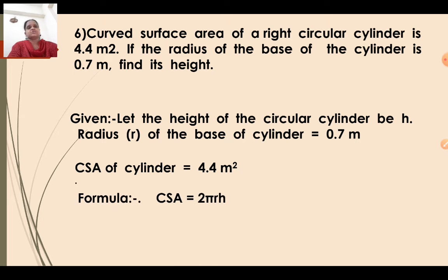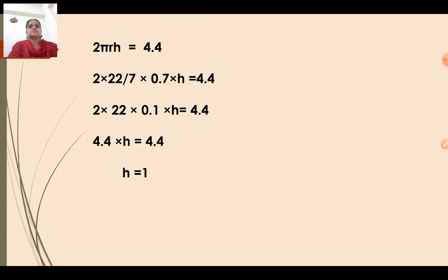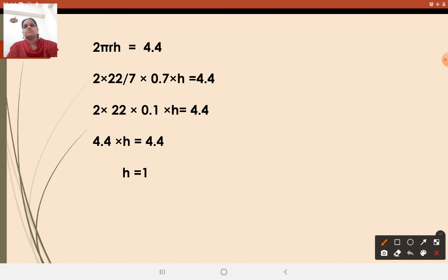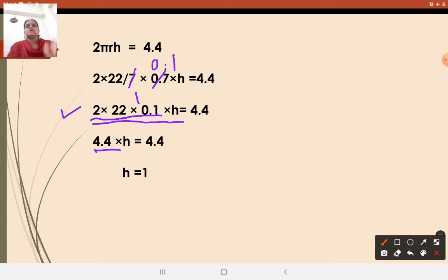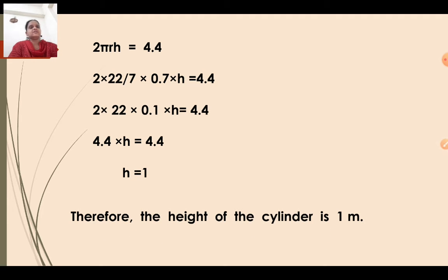We will consider the height as H and substitute in the formula. Curved surface area equals 2πRH. So 2 into 22/7 into 0.7 into H equals 4.4. The 7 in the denominator cancels with 0.7 to give 0.1. So you get 2 into 22 into 0.1 into H. That is 22 into 2 equals 44, and 44 into 0.1 equals 4.4. So 4.4 into H equals 4.4, therefore H equals 1. The height of the cylinder is 1 meter.